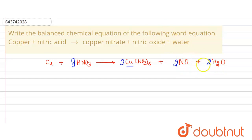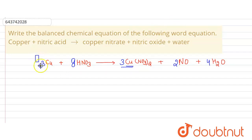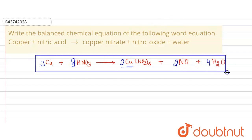Multiplying by 4 balances hydrogen and oxygen. Copper is 3, so it is multiplied by 3. This gives the final balanced chemical equation by the hit and trial method. Thank you, have a nice day.